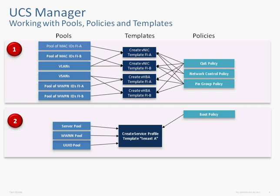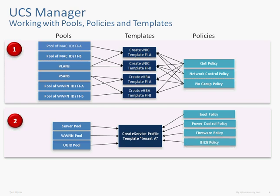If I boot from SAN, where do I actually boot from? Those things are set up in the boot policy. There's a power control policy added in version 1.4. The firmware policy is where we define which BIOS version and which adapter firmware version needs to be running on the blade for this service profile template — relevant because a blade set up for Oracle, SAP, Exchange, or ESX could require different firmware versions. The BIOS policy ensures individual BIOS settings are correct for the service profile. And then there's the adapter policy. We also need to pick which connectivity options to associate with the service profile.